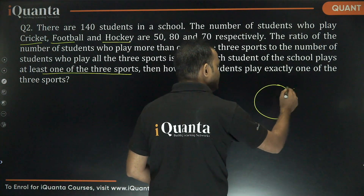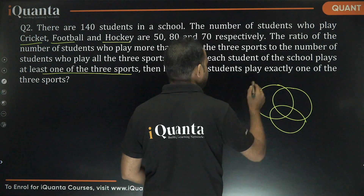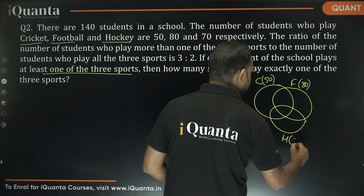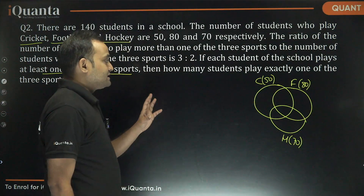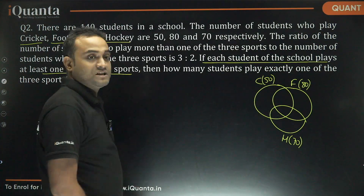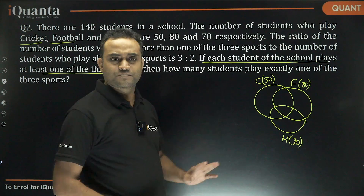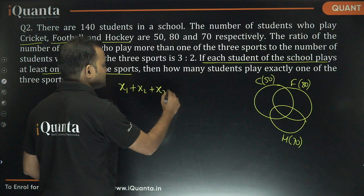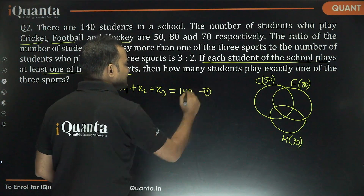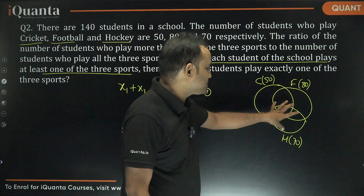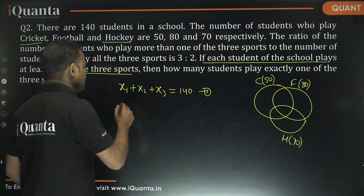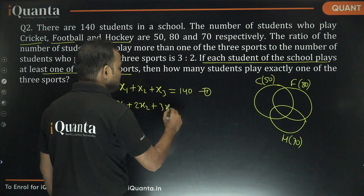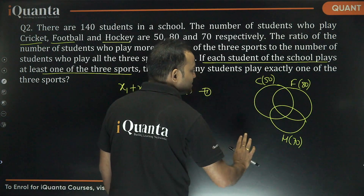We have three groups: cricket (50), football (80), and hockey (70). Since each student plays at least one sport, the number who play none is zero. So: exactly one sport + exactly two sports + exactly three sports equals 140. When we add cricket + football + hockey, students playing exactly one sport are counted once, exactly two are counted twice, and exactly three are counted thrice — giving us 200.